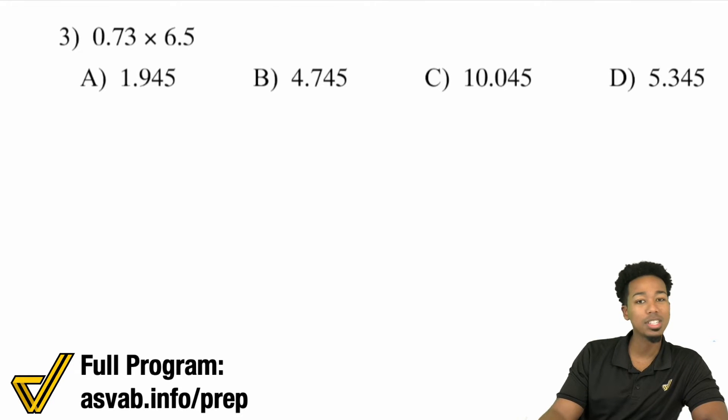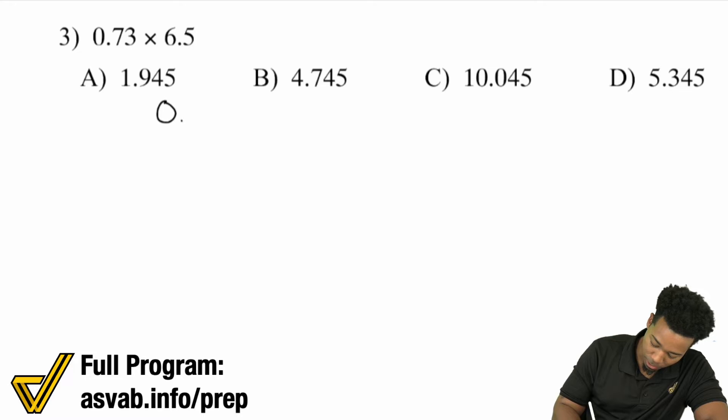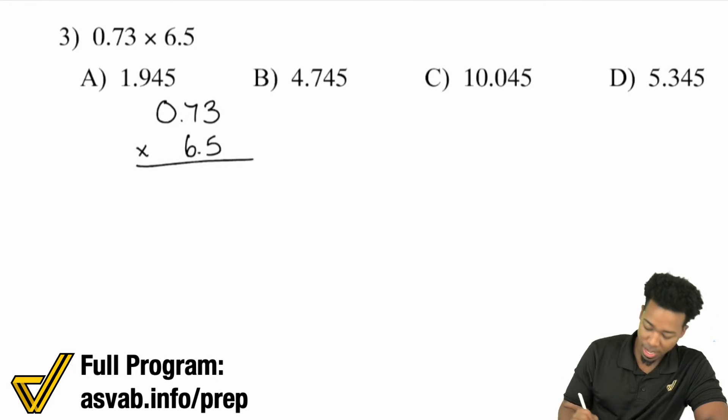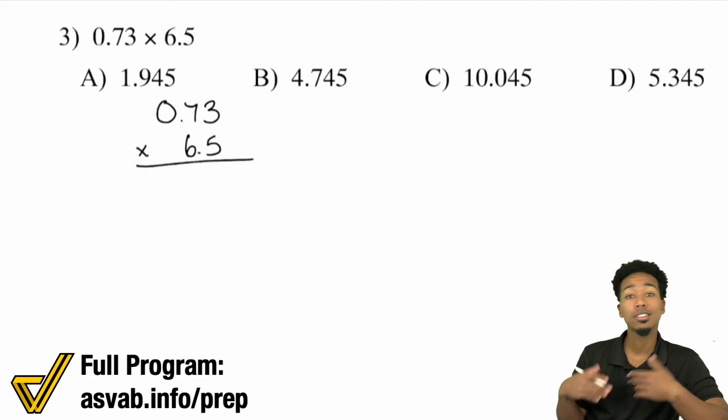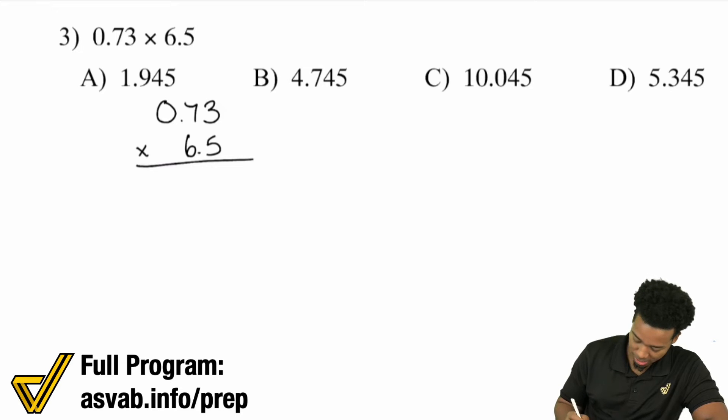We got 0.73 times 6.5. And unlike addition, notice that you don't have to line up the place values. You don't have to care about any of that. Pretend the decimals aren't there, multiply, then bring them back. Just that easy. Let's take care of business here.